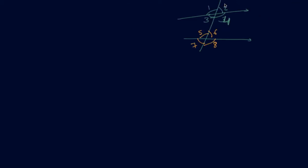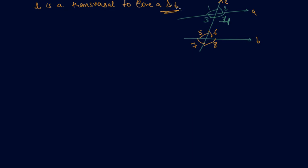So students, I have again drawn a transversal line traversing lines A and B. I will write: L is a transversal to line A and B. Now let us come to the part of the relation between each of the angles.